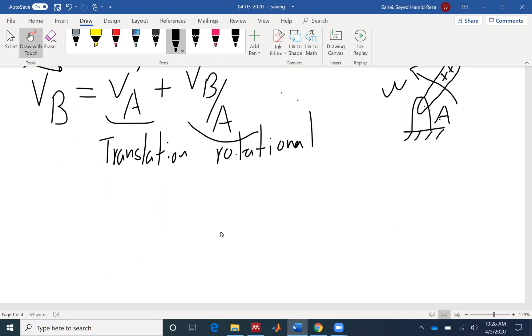So for acceleration, the equation is very similar. AB is the same as AA plus the relative velocity between the two. But for acceleration, we need to remember that the acceleration has two components, the tangential component and the normal component.